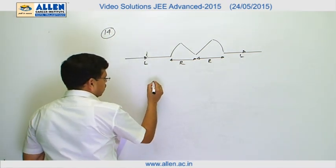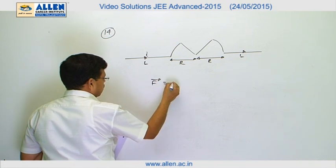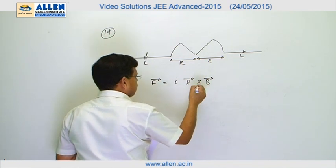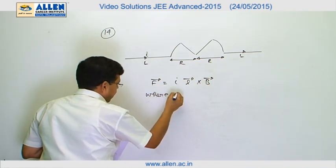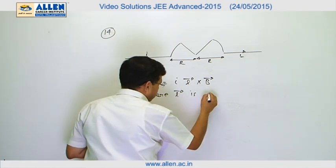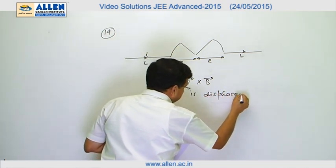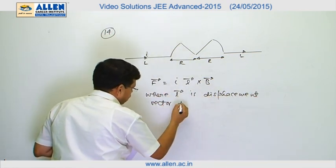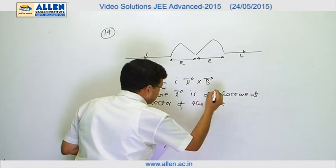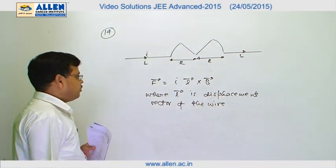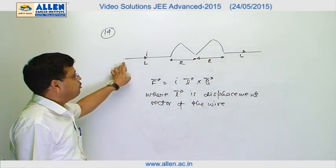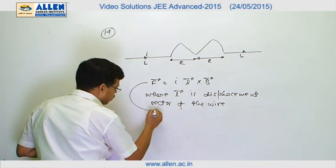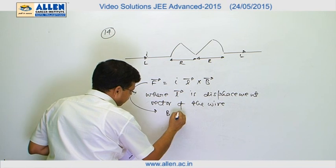As we know that force is equal to i l cross b, where l is displacement vector of the wire, that is, it is the shortest distance between the initial starting of the wire and the end of the wire. And we know that this expression is valid only when b is uniform.